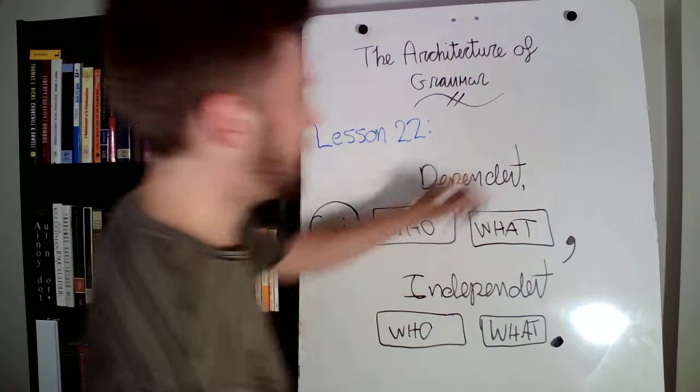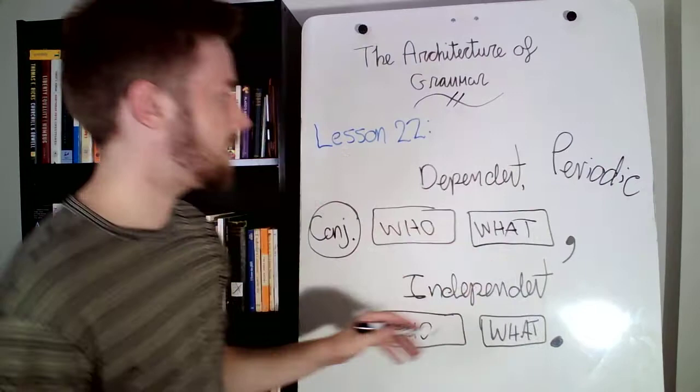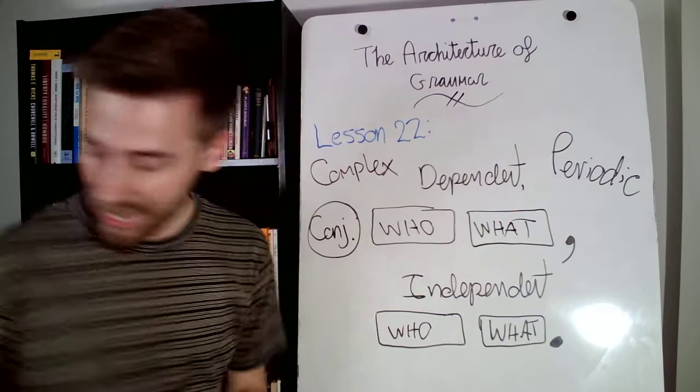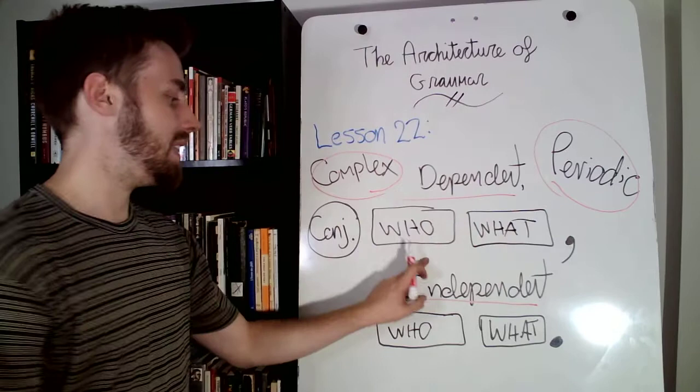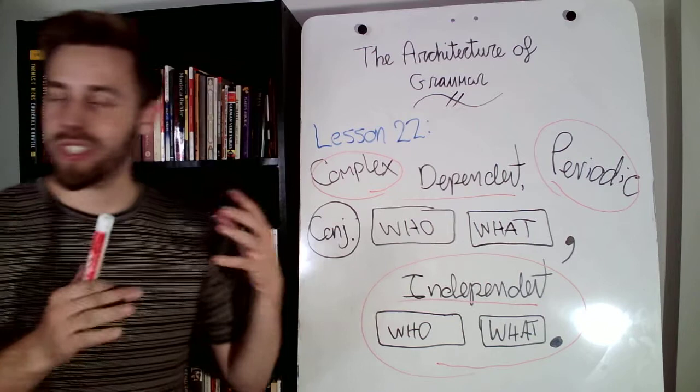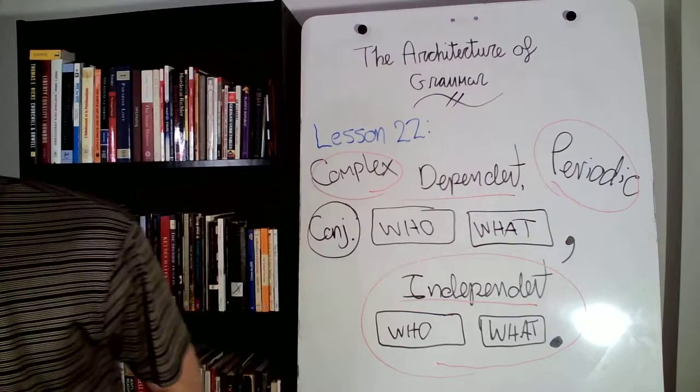So here the comma separates the dependent from the independent. Now, this is a periodic sentence. So this is also a complex sentence, as we mentioned, because it has a dependent and an independent, and it's a periodic sentence because the independent is at the end.